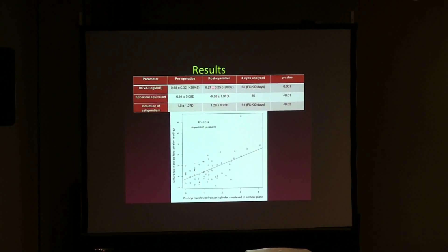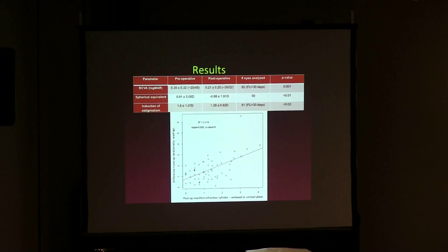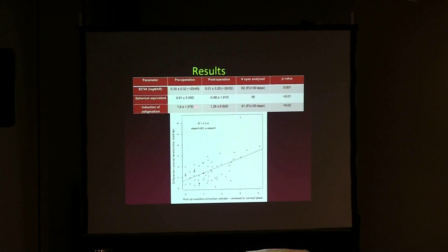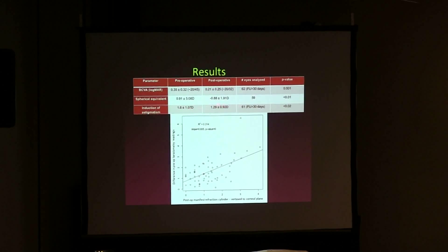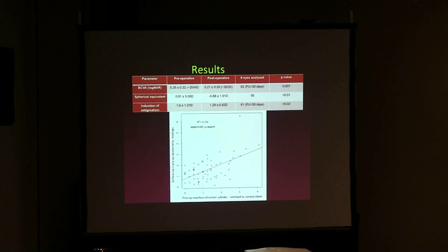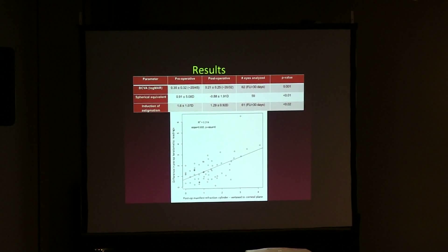The spherical equivalent showed a slight myopic shift, probably because an iris-sutured IOL sits a little more anterior than an in-the-bag IOL. So if you're going to put an iris-sutured IOL, I would aim for about half a diopter of hyperopia, and you will end up right on target. Regarding induction of astigmatism — because of the 3.5 millimeter corneal incision, we actually ended up with less astigmatism than before. Our PENTACAM studies show no induction of astigmatism with this technique.